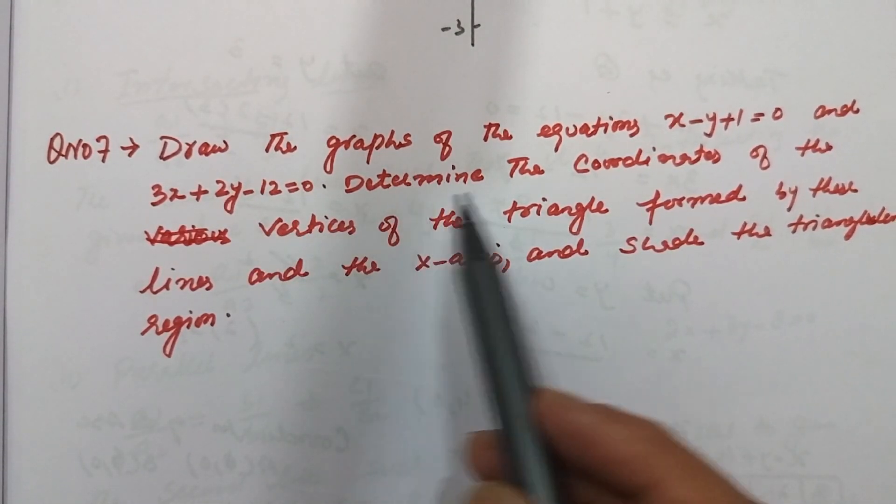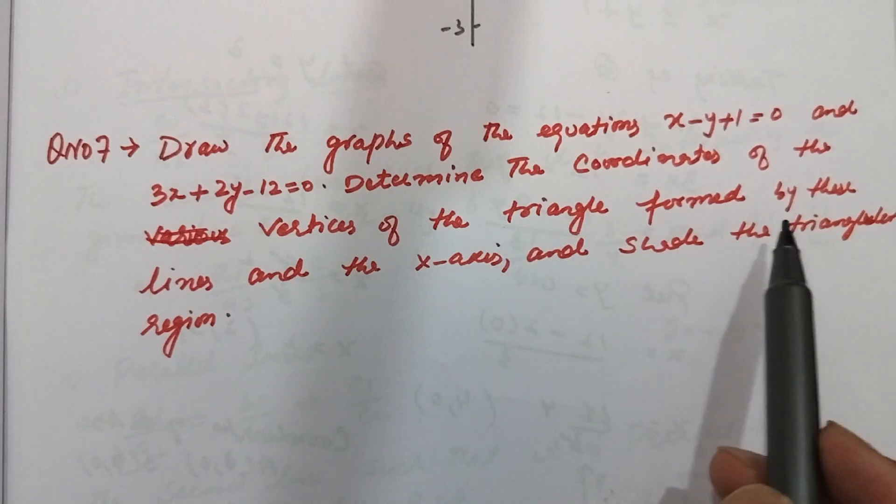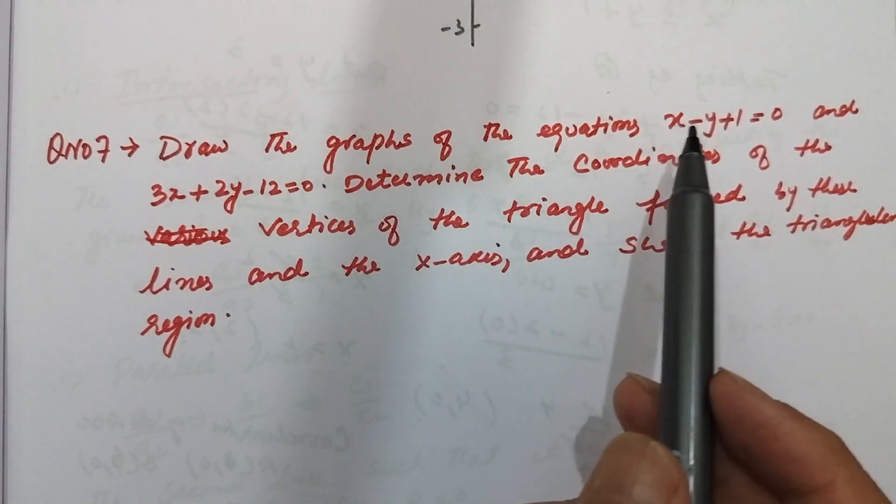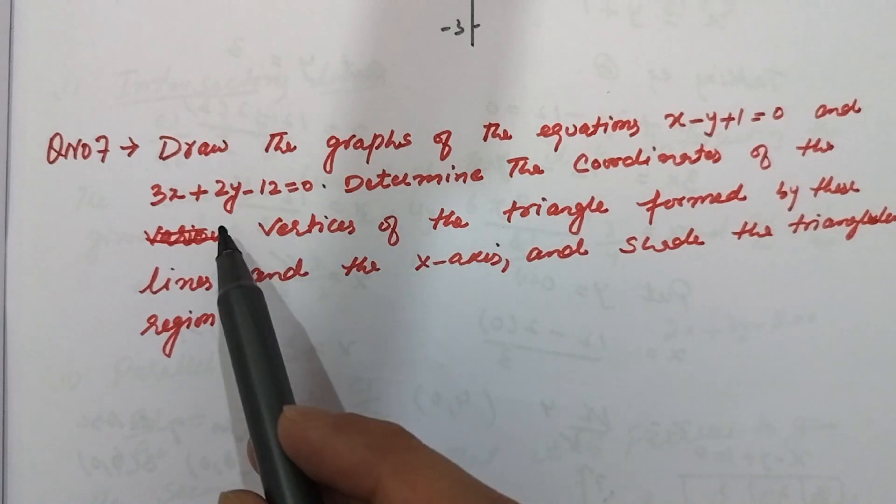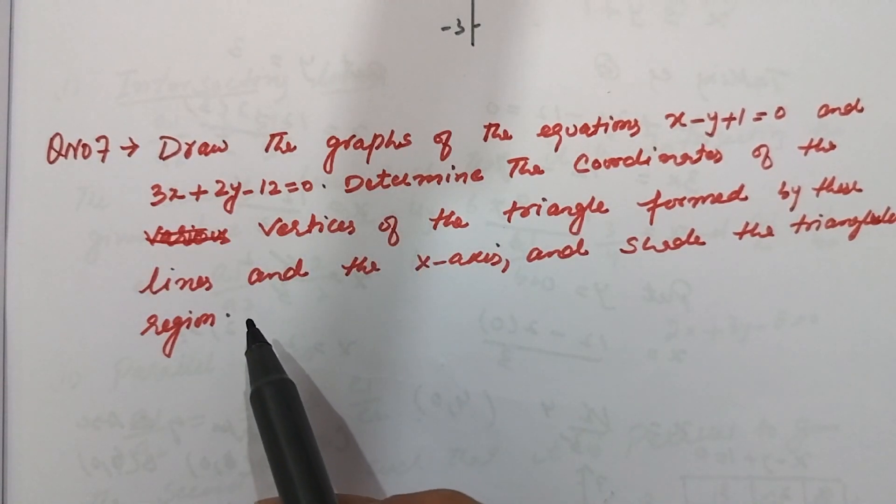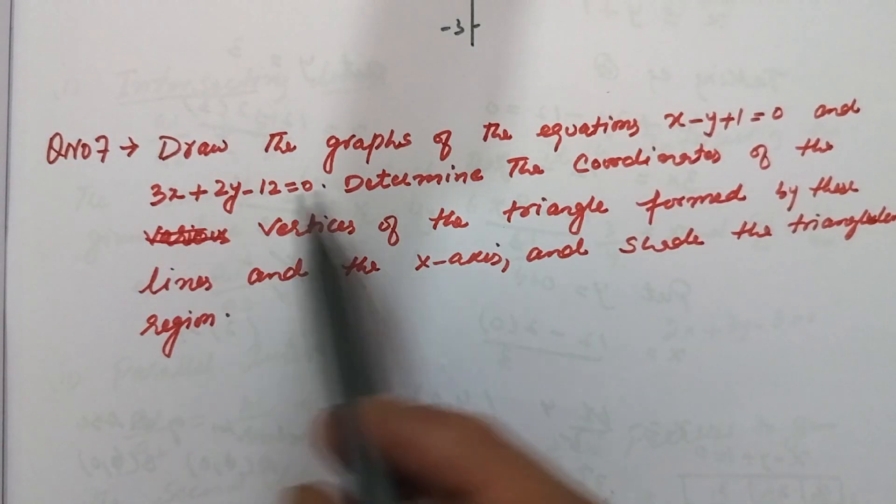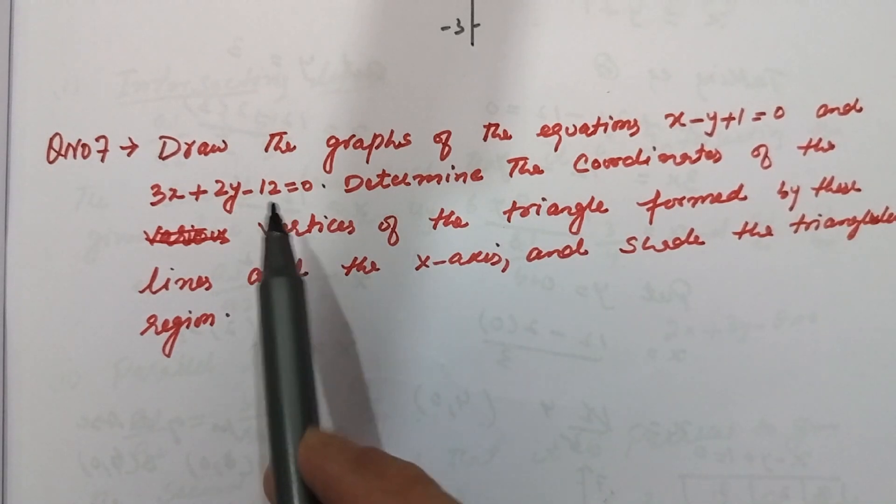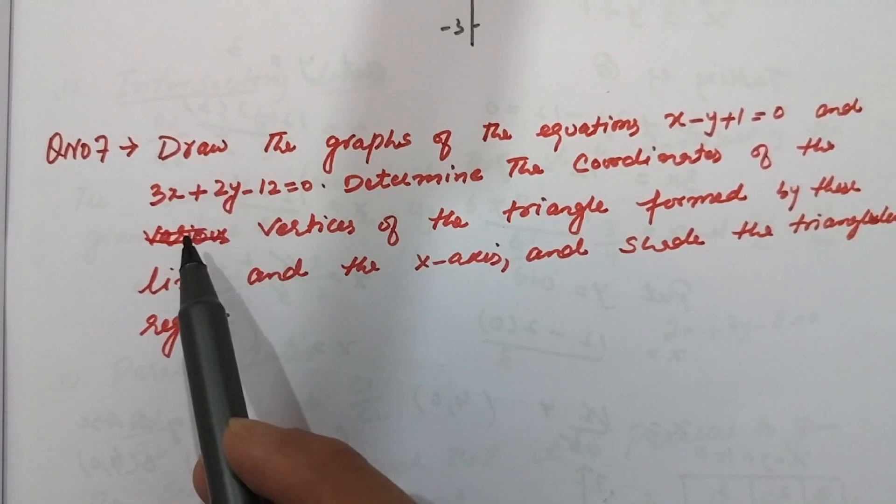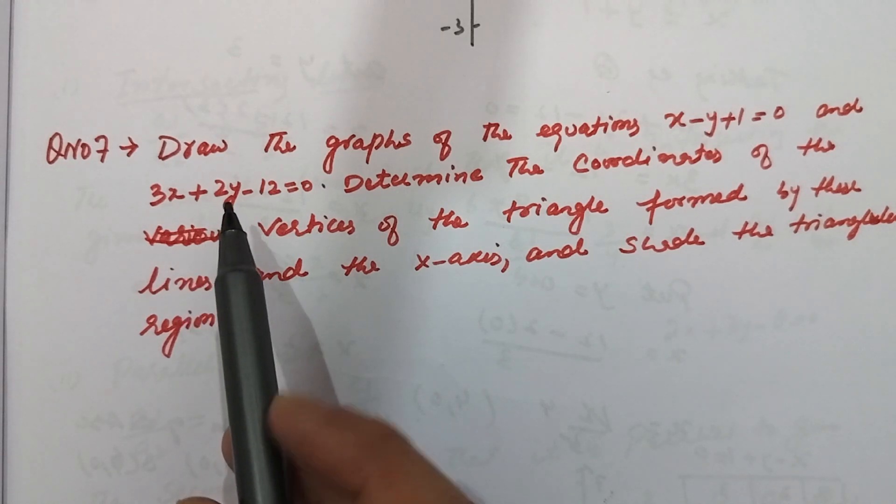We need to determine the coordinates of the vertices of the triangle formed by these lines when they intersect with the x-axis. The lines are intersecting with the x-axis to form a triangle, and we are going to find the coordinates which are called the triangle vertices.